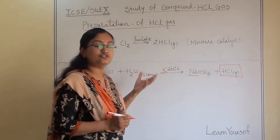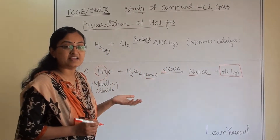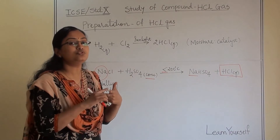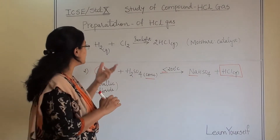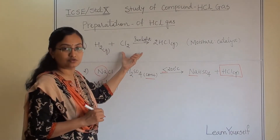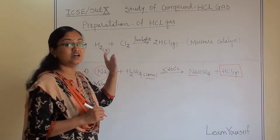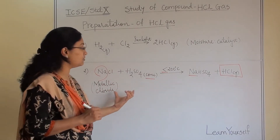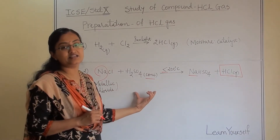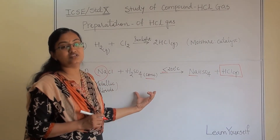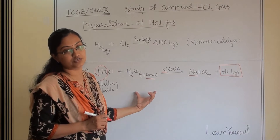So hydrogen chloride gas is prepared through two different processes: one from hydrogen gas and chlorine gas, and another from metallic chloride and concentrated sulfuric acid.